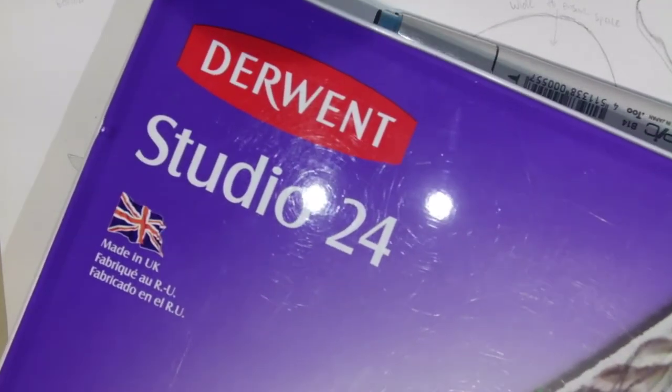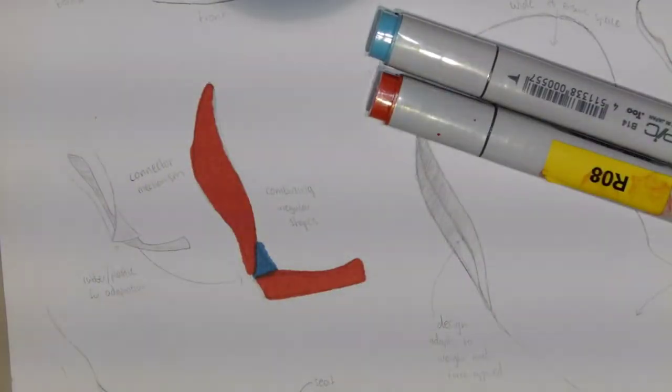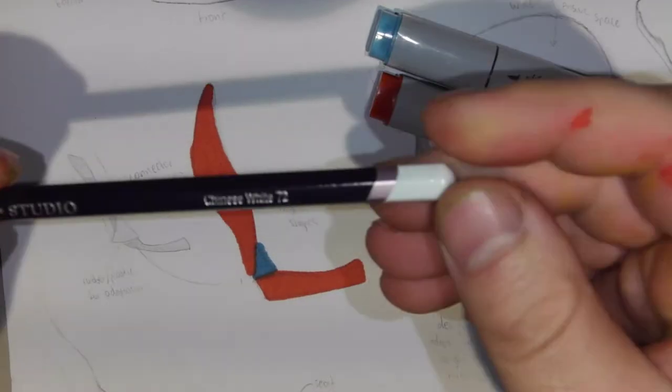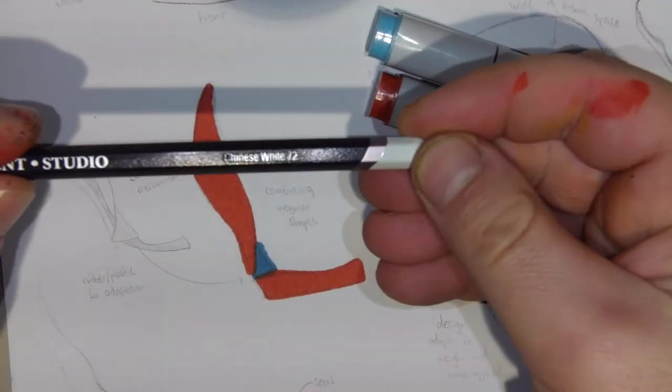So I've also got a Derwent 24 set. All you need in this set is a white and a black Derwent. So let's open that up. Hopefully this pack has a white and a black, and it certainly does. So the white, this one is the Chinese white.